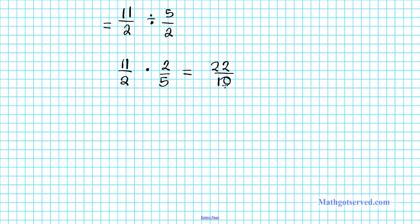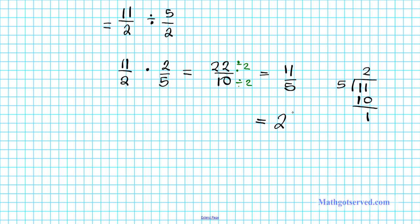The greatest common factor of 22 and 10 is 2. So we divide both numerator and denominator by 2, giving us 11 over 5. If we want to write this as a mixed number, we divide 11 by 5. Remember: the numerator goes in the doghouse. 5 goes into 11 twice; 2 times 5 is 10, remainder 1. Since 1 is smaller than 5, our final answer is 2 and 1 over 5.